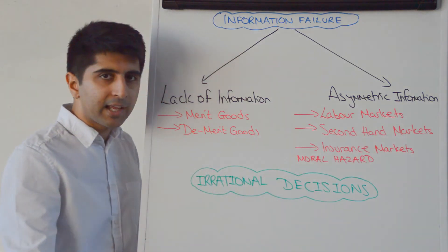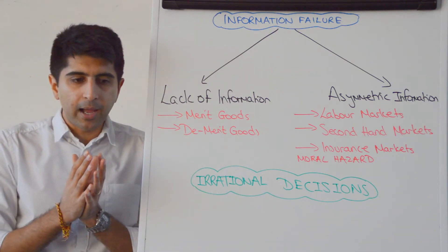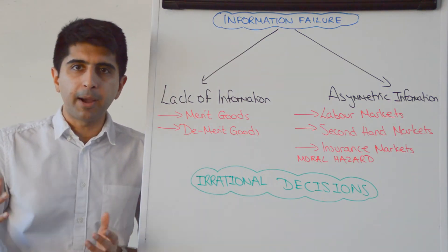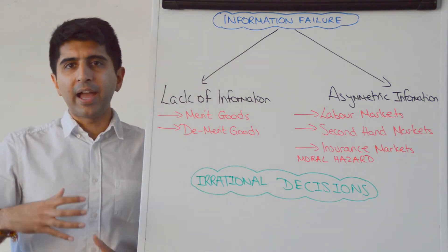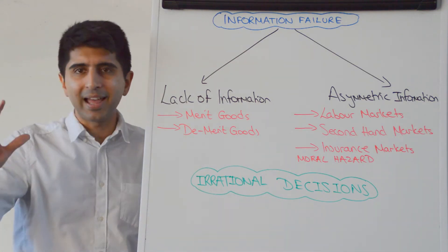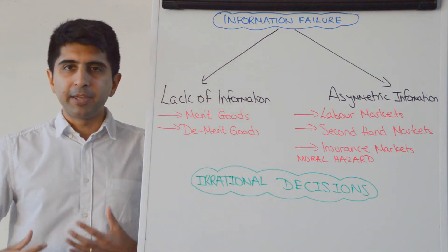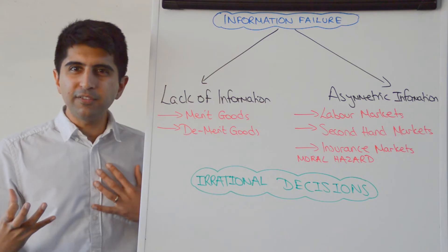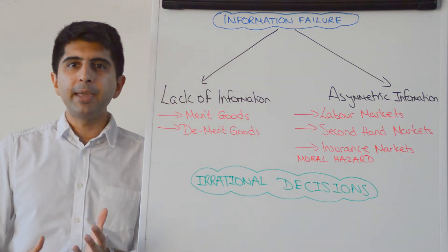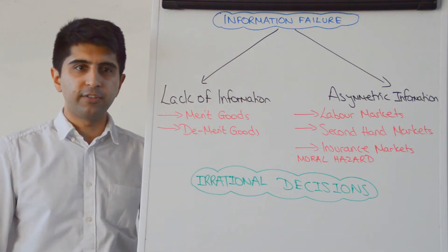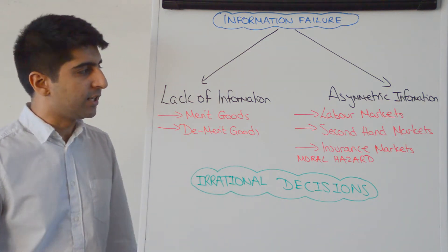The same argument applies to second hand markets. The famous example of George Akerlof talking about the issue of second hand car markets, where it's always the buyer that is lacking the information, whereas the seller has all the information about the state of the car. Because the buyer doesn't necessarily have that information, the buyer may make an irrational decision to buy that car, even though it won't maximise the utility of the buyer.